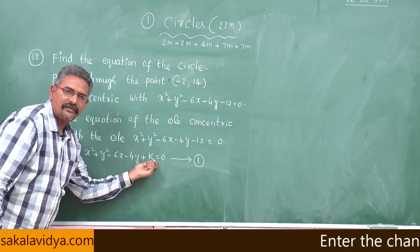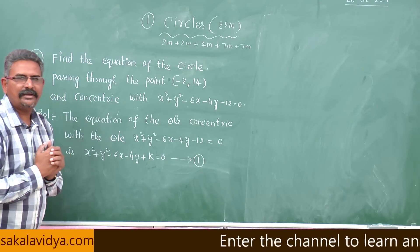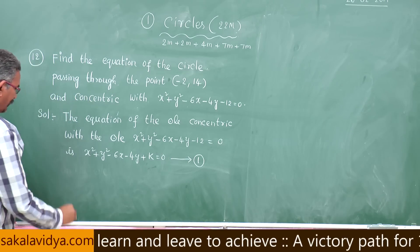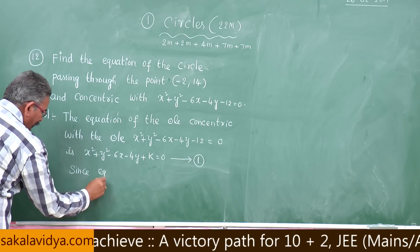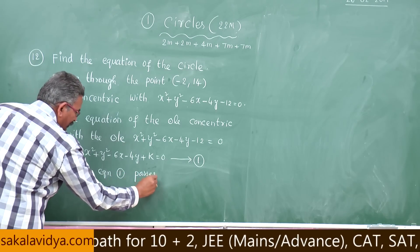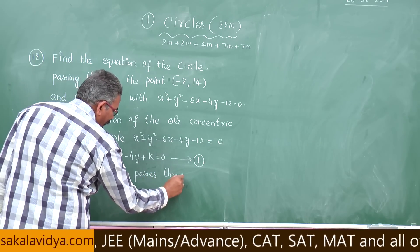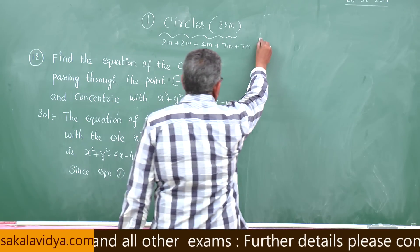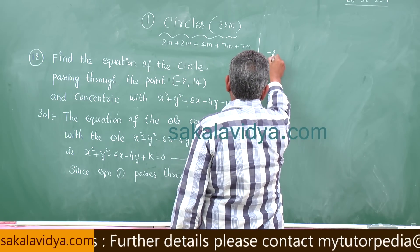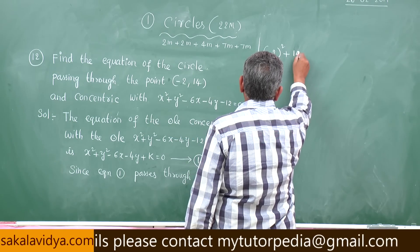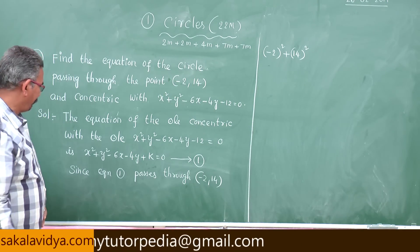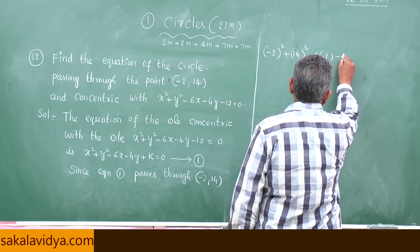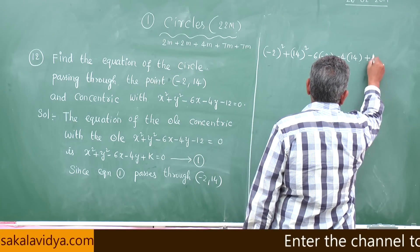Now we have to determine the value of k. Since equation 1 passes through (-2, 14), this point must satisfy the equation. So we substitute: (-2)² + 14² - 6(-2) - 4(14) + k = 0.